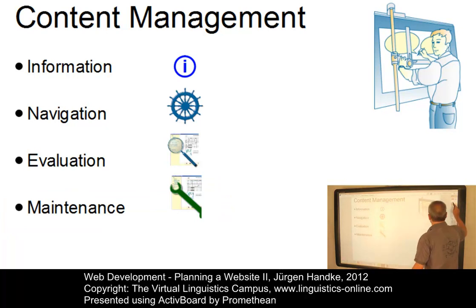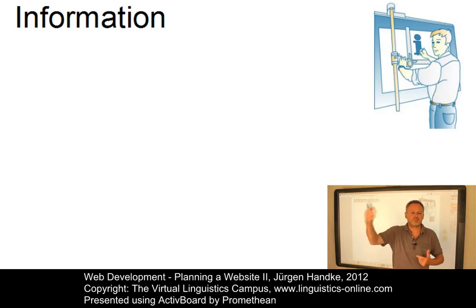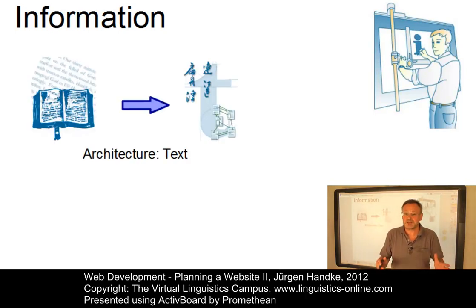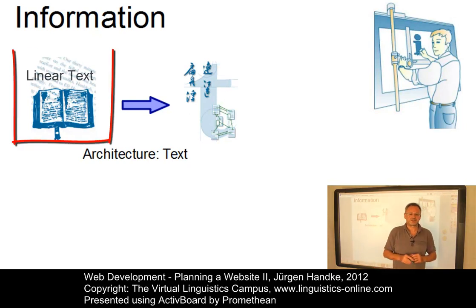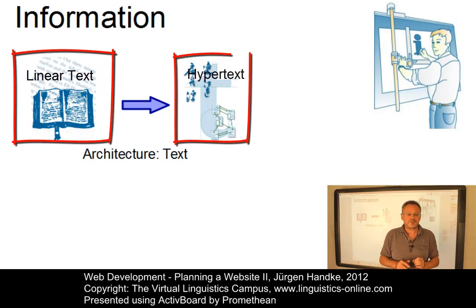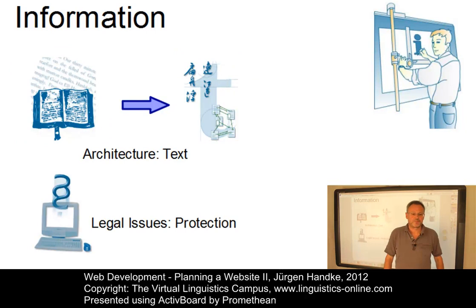Let's look at information first. Those in a website team responsible for the content will have to deal with questions concerning the organization, mapping, and linking of the information on the site. Information architecture on the web is different from other media, since the web allows a structure which is not as linear as in a book. This means that texts taken from books have to be rewritten to fit the requirements of on-screen reading and hypertext structure. There are also legal issues that come into play when one develops content from pre-given texts.